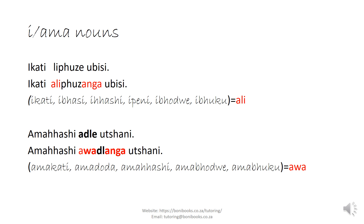The next group is your i-ama group. Like ikati lipuze ubiisi, we say ikati alipuzanga ubiisi. Nouns like ikati, iashi, ipin all take ali in the negative. Remember, we also have the anga suffix as a negative marker. We change the subject prefix to the negative form and suffix anga — so alipuzanga. Ama haashi awaldanga. The prefix depends on the noun group you are working with — for ama nouns we say awa.